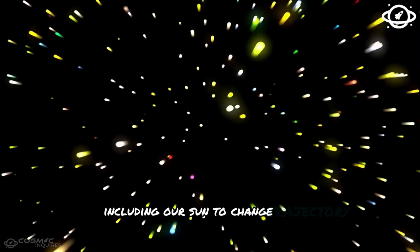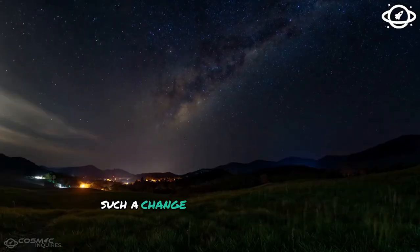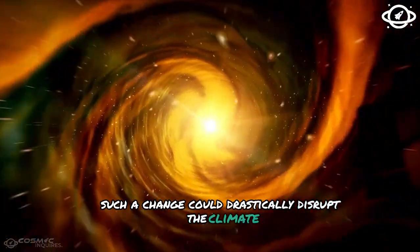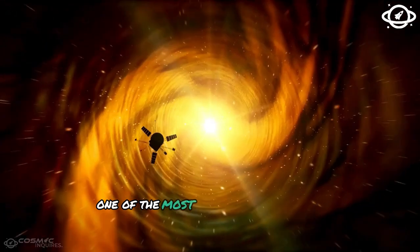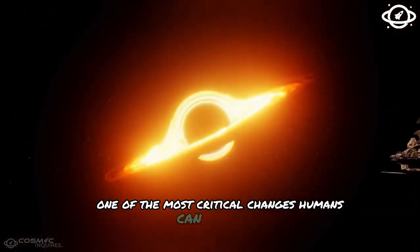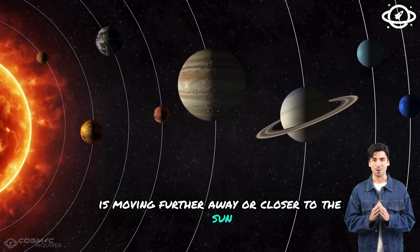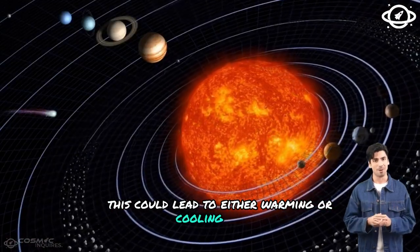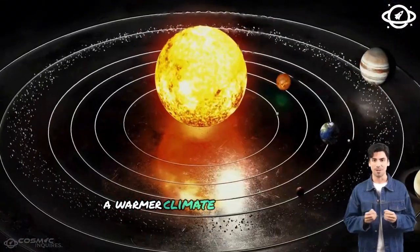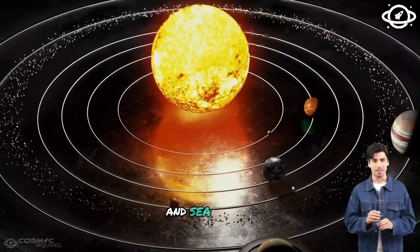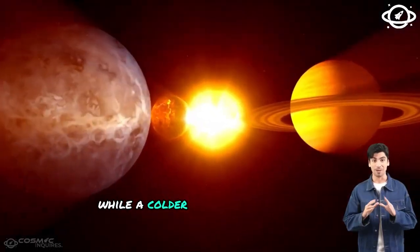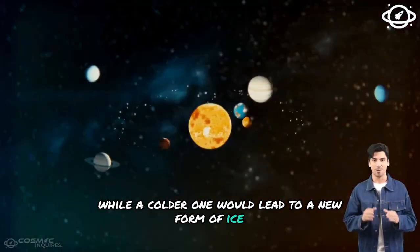This could cause some stars, including our sun, to change trajectory. Such a change could drastically disrupt the climate on Earth. One of the most critical changes humans can experience is moving further away or closer to the sun. This could lead to either warming or cooling effects. A warmer climate could make ice caps melt and sea levels rise, while a colder one would lead to a new form of ice age.